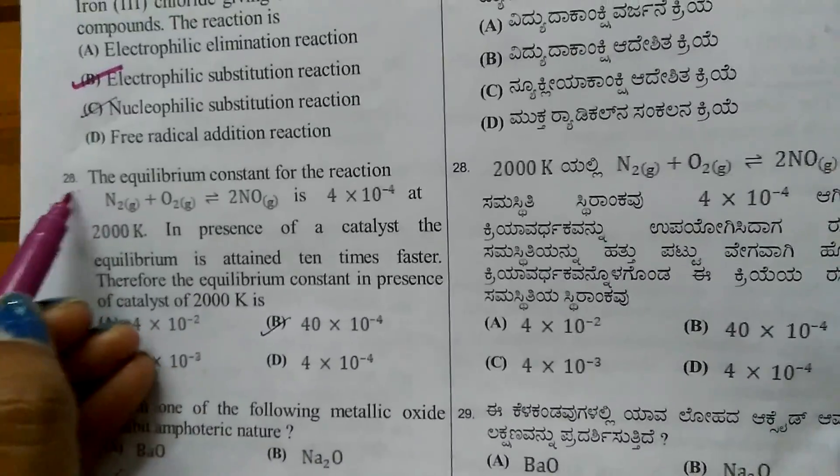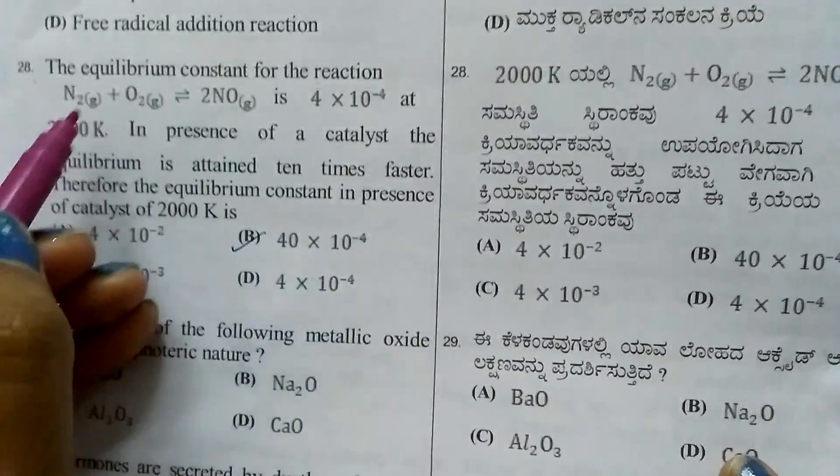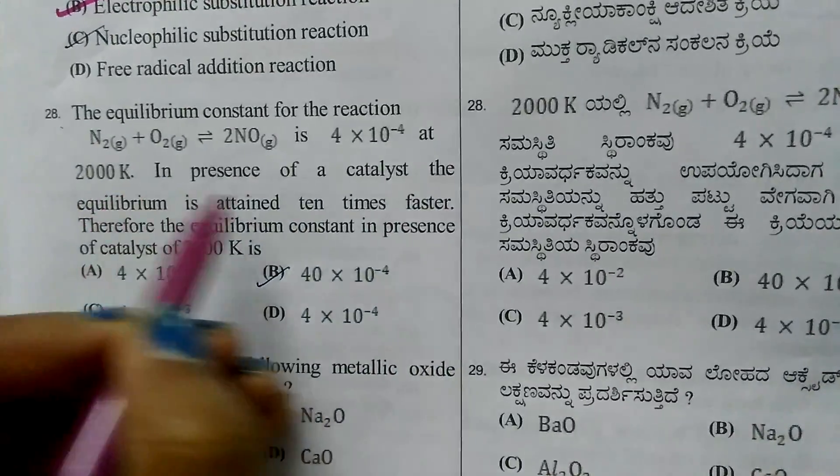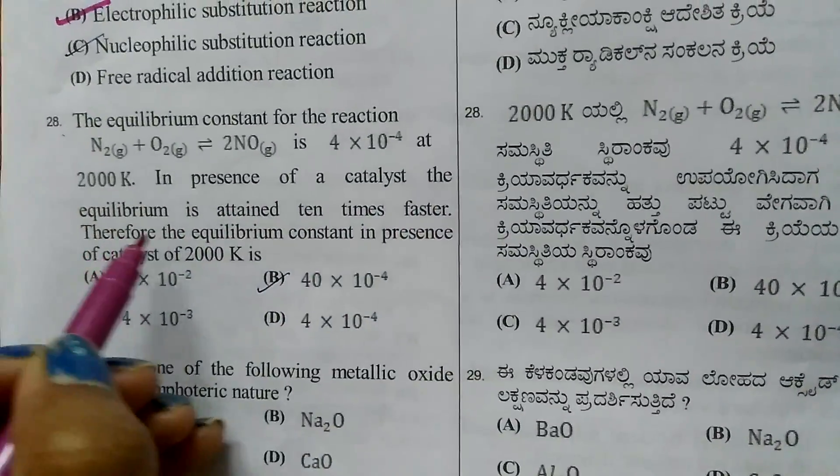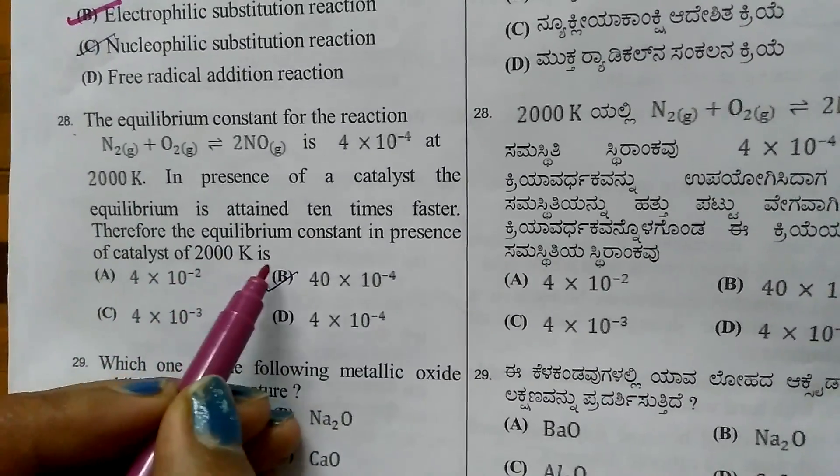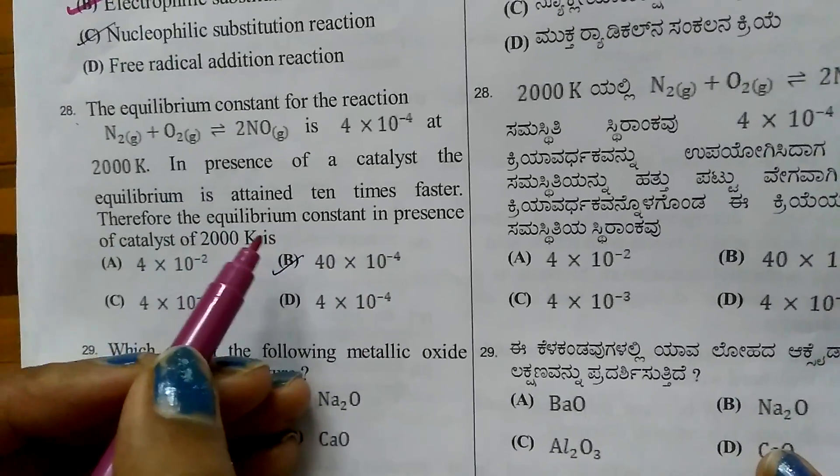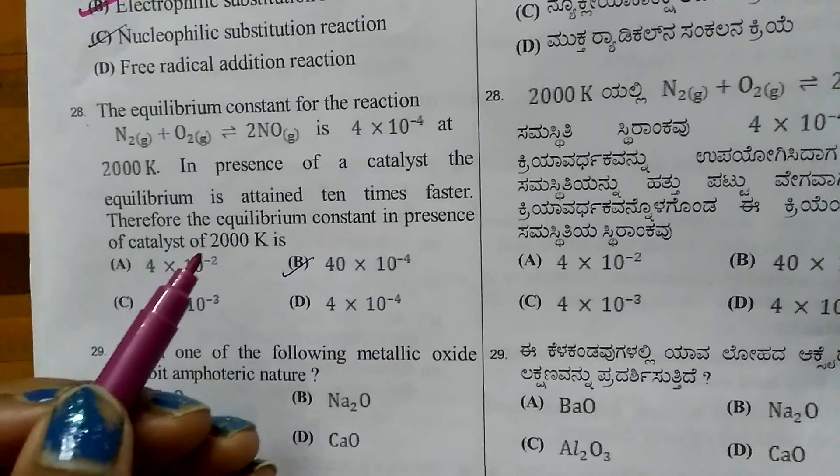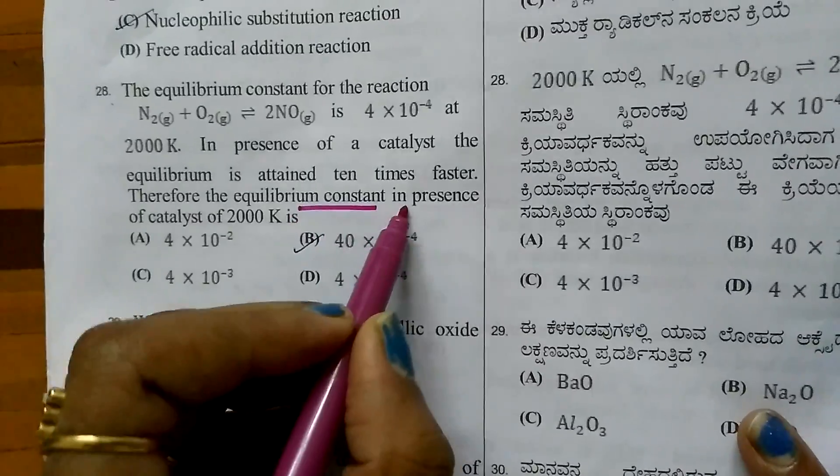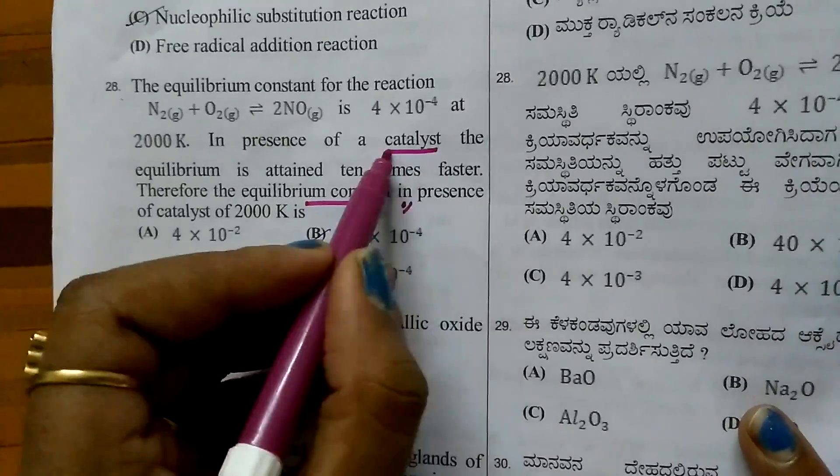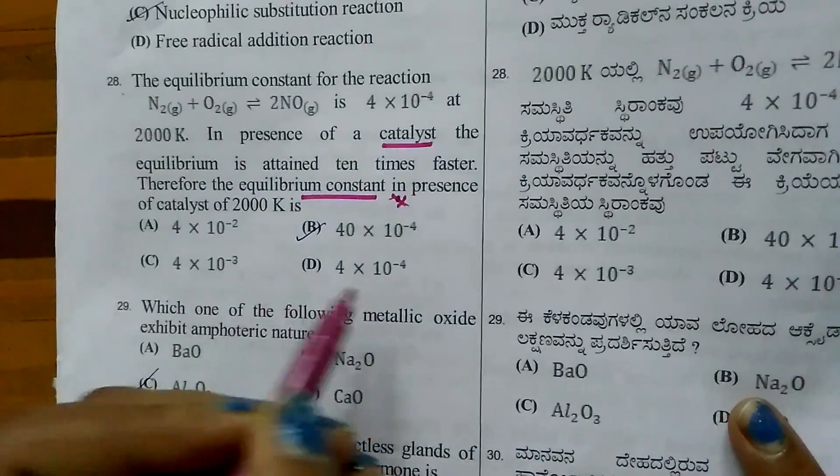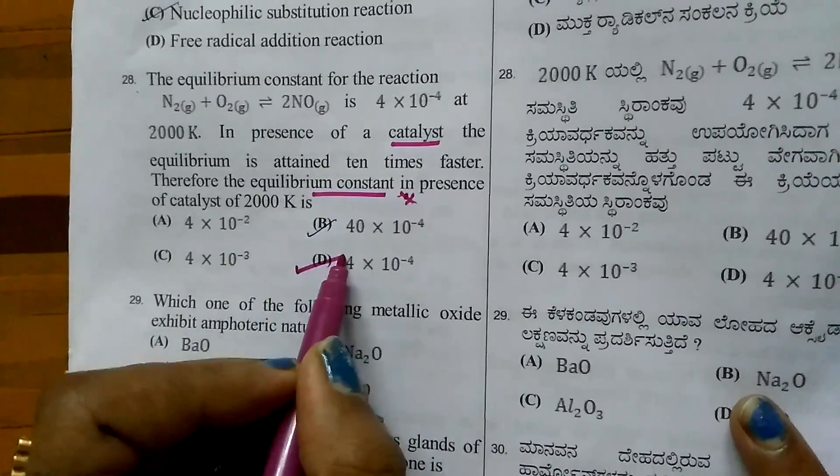Question 28. The equilibrium constant for the reaction N2 + O2 gives 2NO is 4×10^-4 at 2000 K. In presence of a catalyst, equilibrium is attained 10 times faster. When you add a catalyst, the rate of forward and backward reactions increase to the same extent, but there is no effect on the equilibrium constant. The answer remains 4×10^-4.